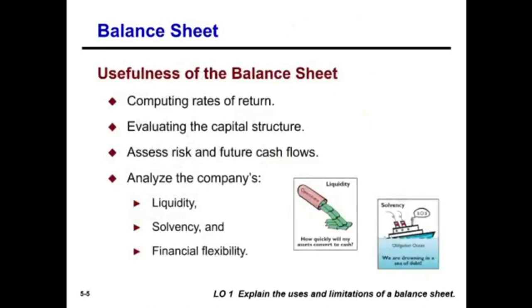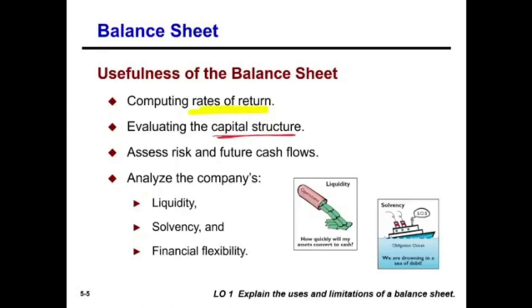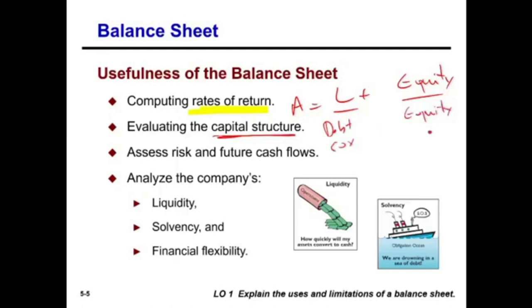How does the balance sheet help us? We're going to compute rates of return and evaluate the capital structure. The capital structure — assets equal liabilities plus equity — tells us whether we're relying more on debt or more on equity. Is it 50-50, 40-60, or 60-40? By looking at our capital structure, it helps us assess risk and future cash flow. Generally speaking, if a company relies more on debt, they are a riskier company. Specifically, we analyze the company using three different categories: liquidity, solvency, and financial flexibility.